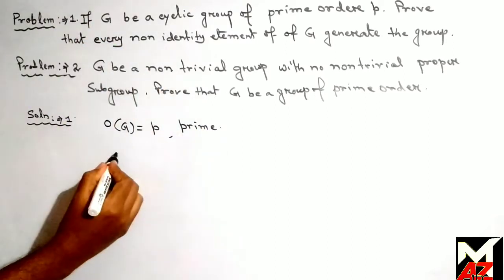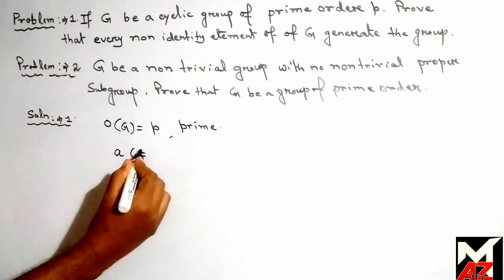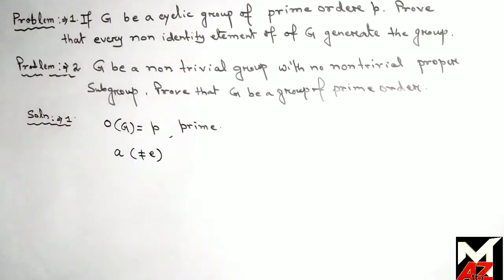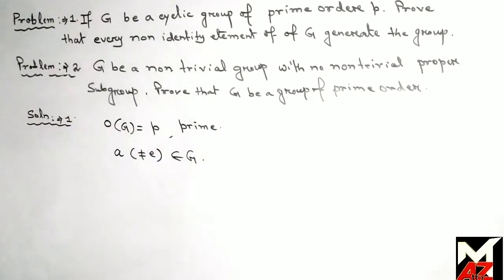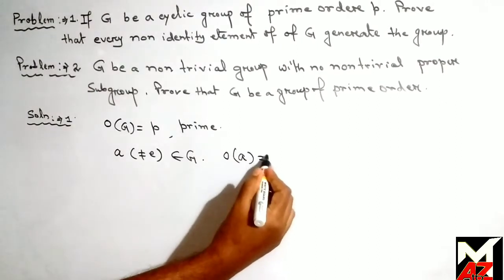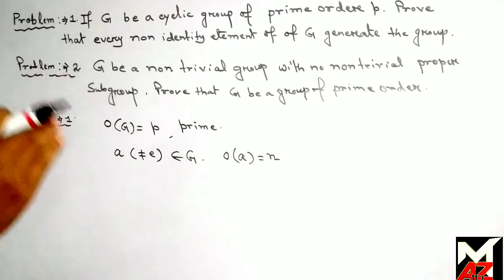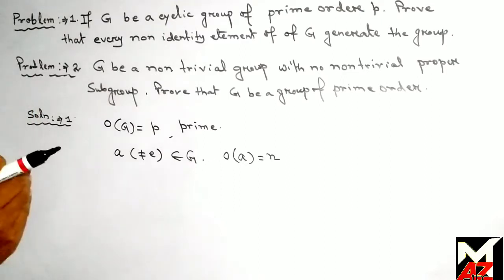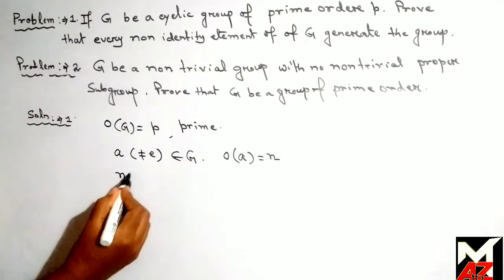We take any element a, which is not the identity element e, belonging to G. Let the order of a be equal to n. We know that the order of every element of a group must divide the order of the group. So from here we write: n divides p.